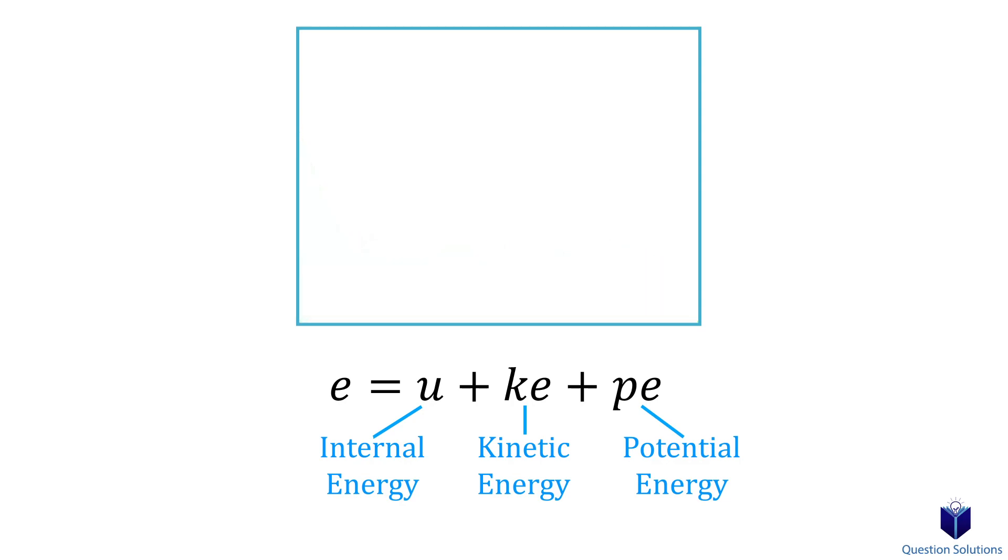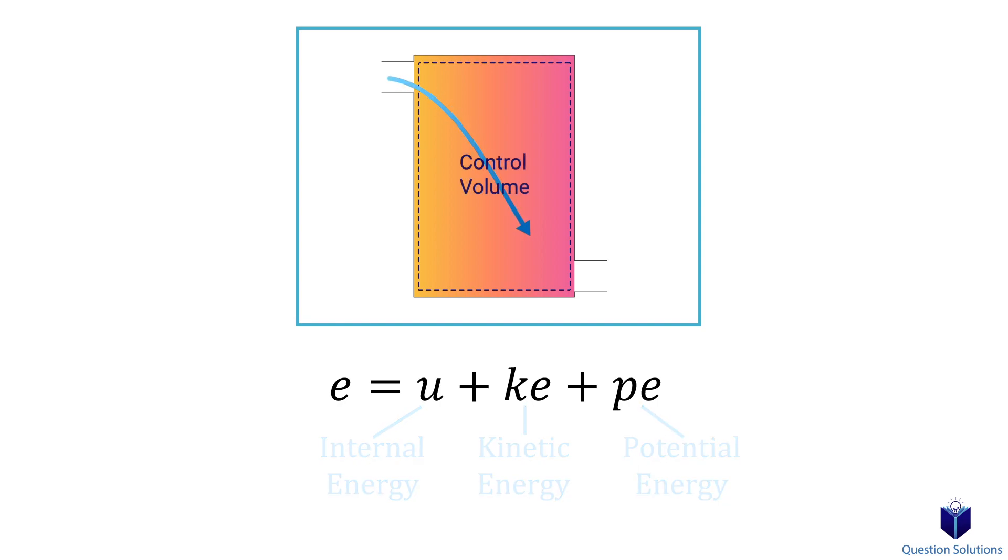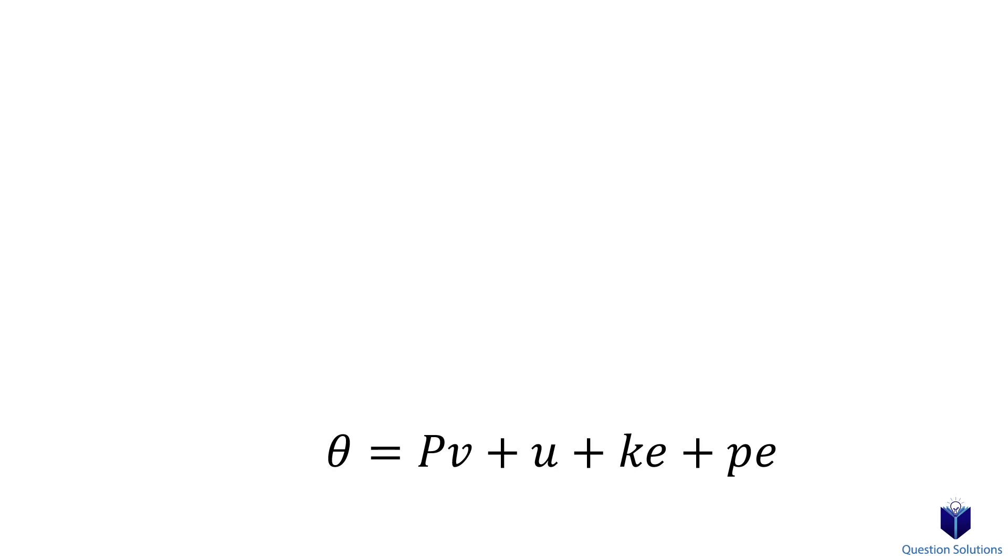If we consider the additional form of energy we talked about—flow energy—then the total energy of a flowing fluid can be written like this. We use θ to represent the total energy of a flowing fluid, so all we did was add the pressure times specific volume part in.